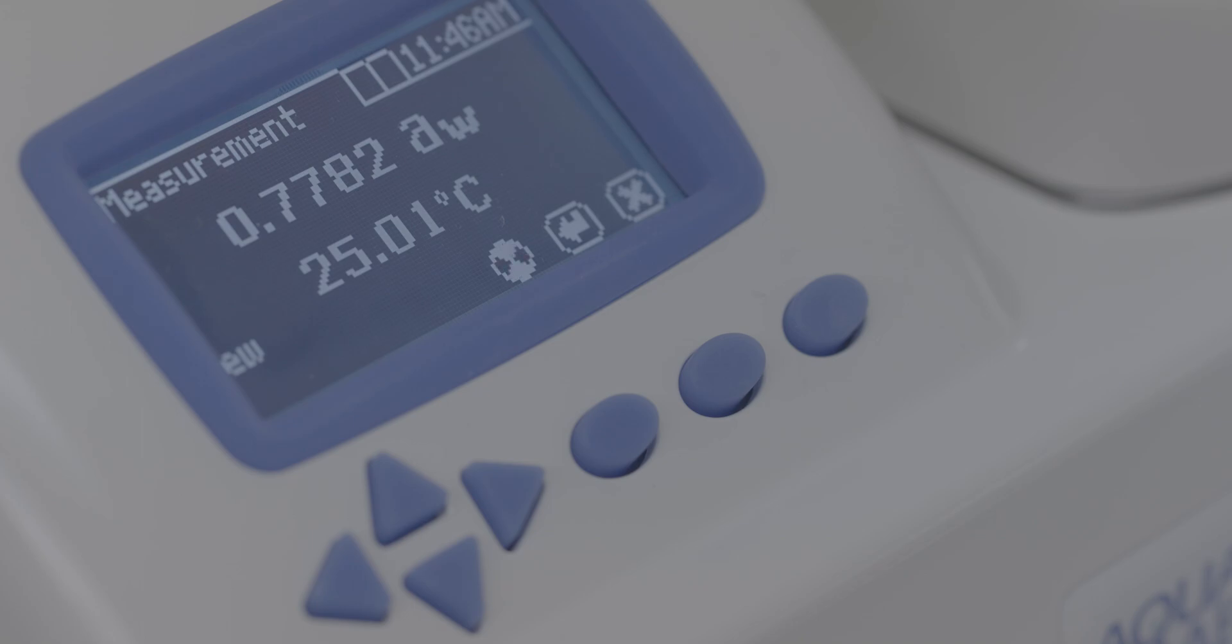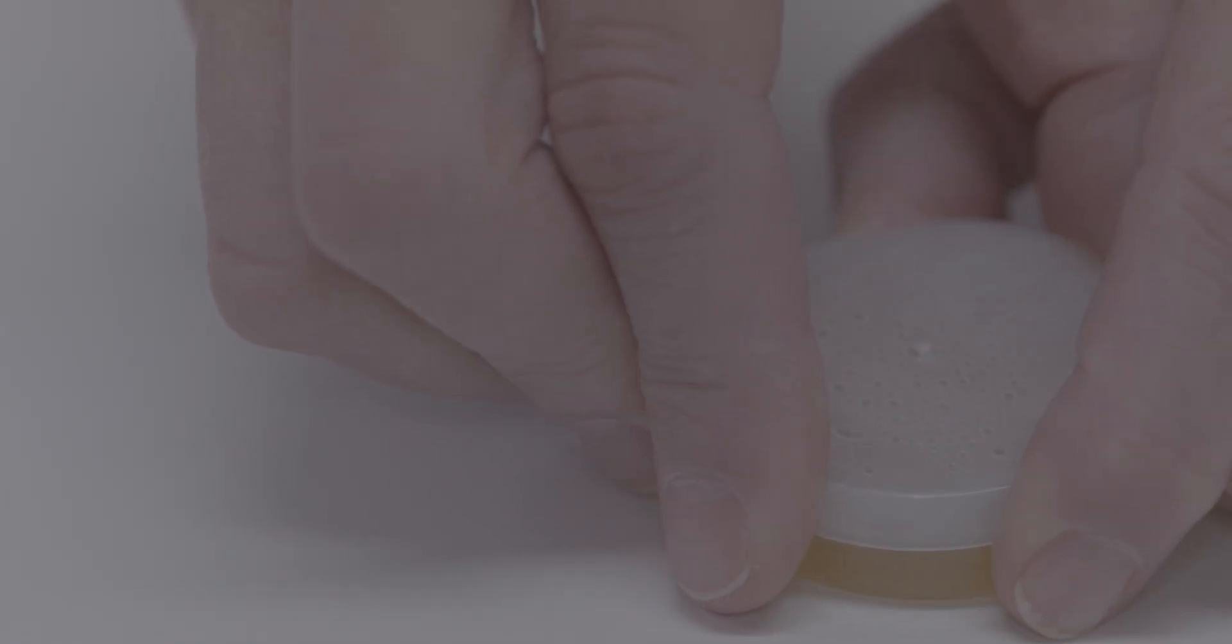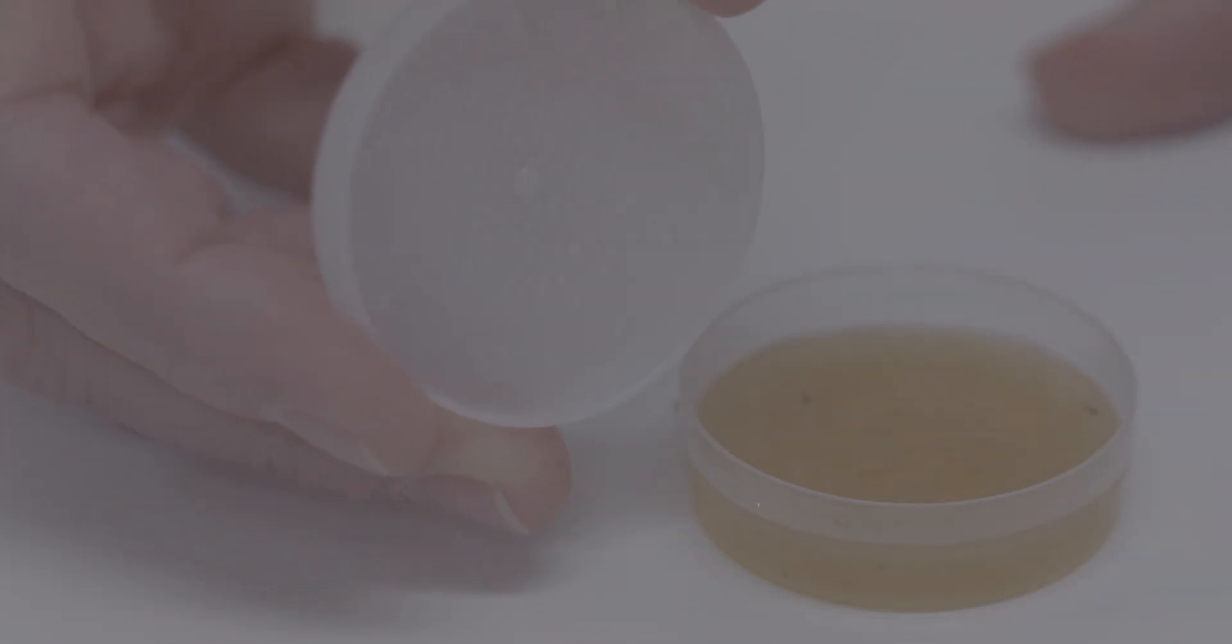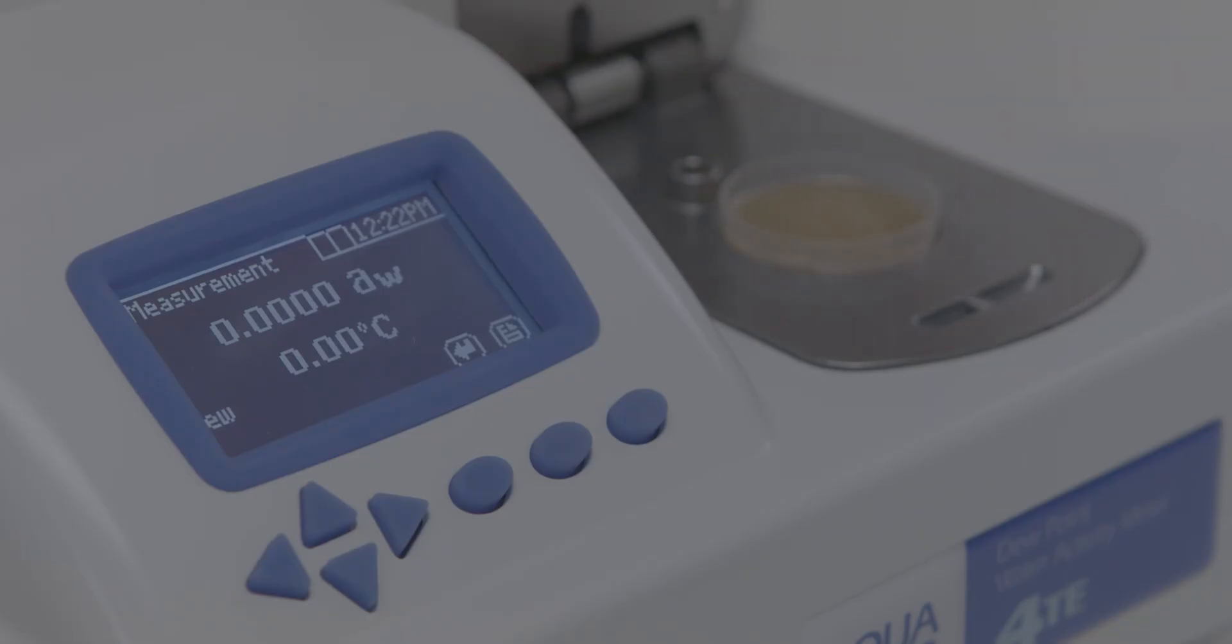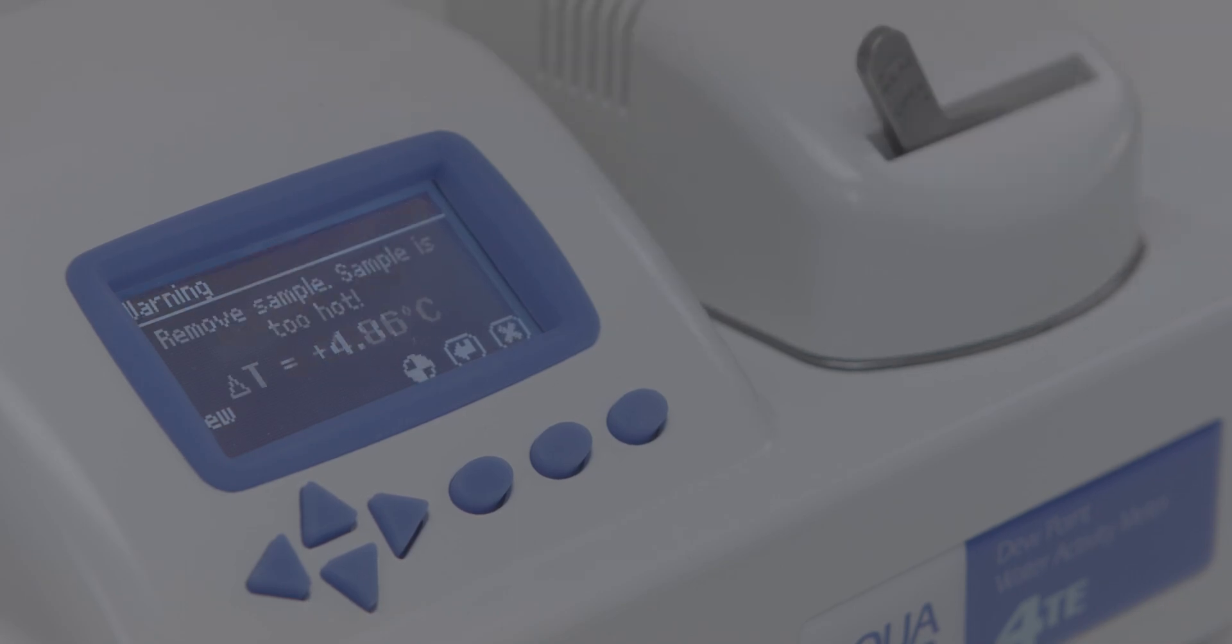Three, your sample temperature and block temperature need to be in the same general range before your reading can be taken. If it's too hot, water can condense on the inside of the sensor chamber. This ruins your water activity readings. If your sample is too hot or too cold, the instrument will ask you to take the sample out.